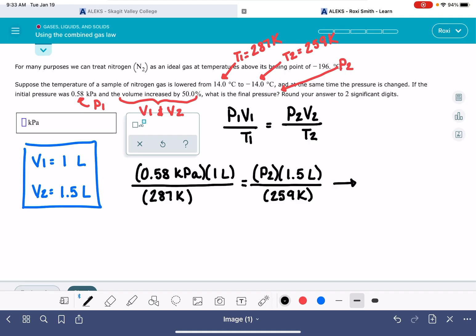And so now we just have to do a lot of math on this problem. I'm going to go ahead and work out the left side first. 0.58 times 1 divided by 287 is 0.00202, and my units here are kilopascals times liters divided by kelvin. And that is going to be equal to P2. And my right side is 1.5 divided by 259, 0.00579, and my units here are liters over kelvin.